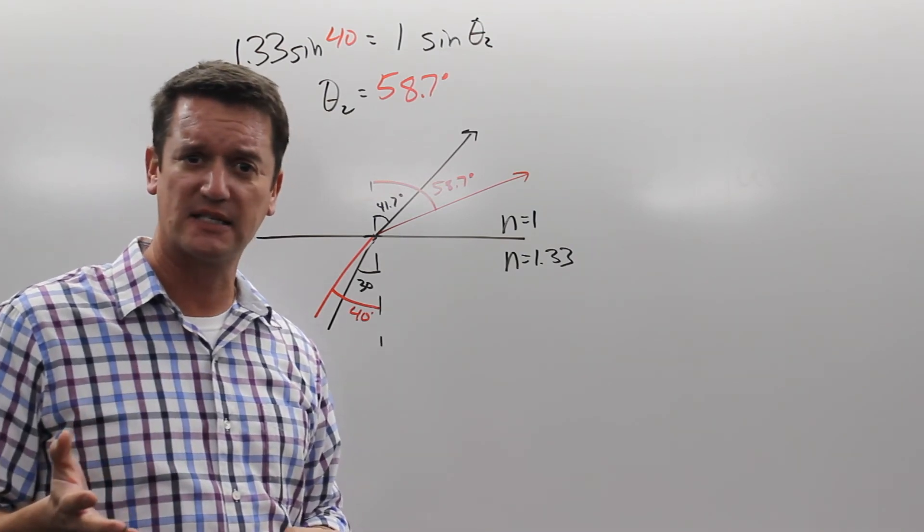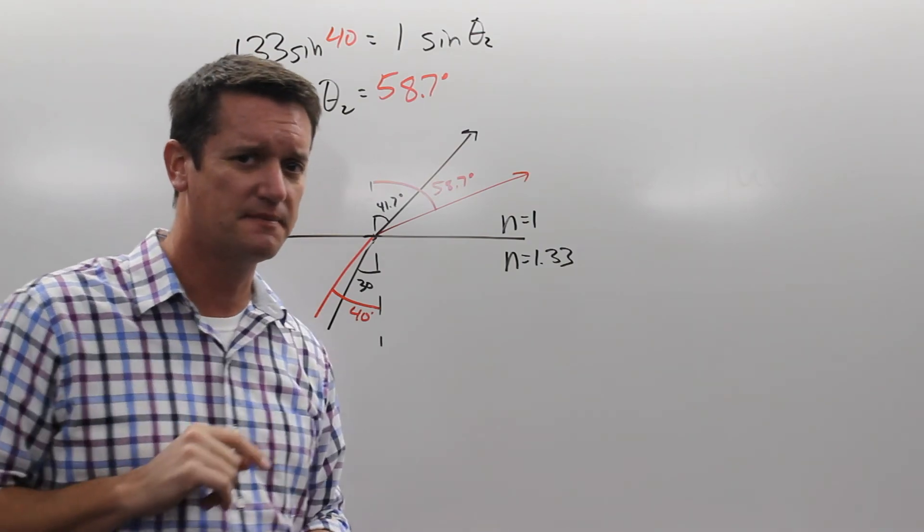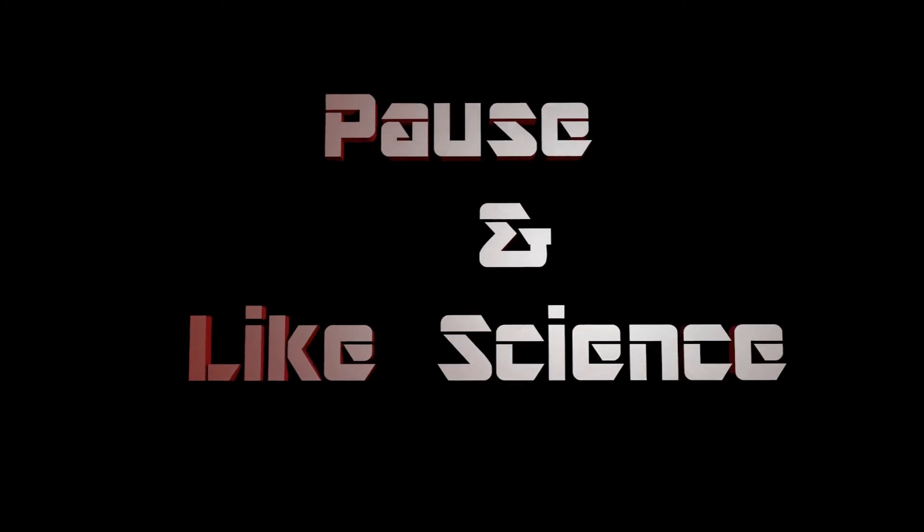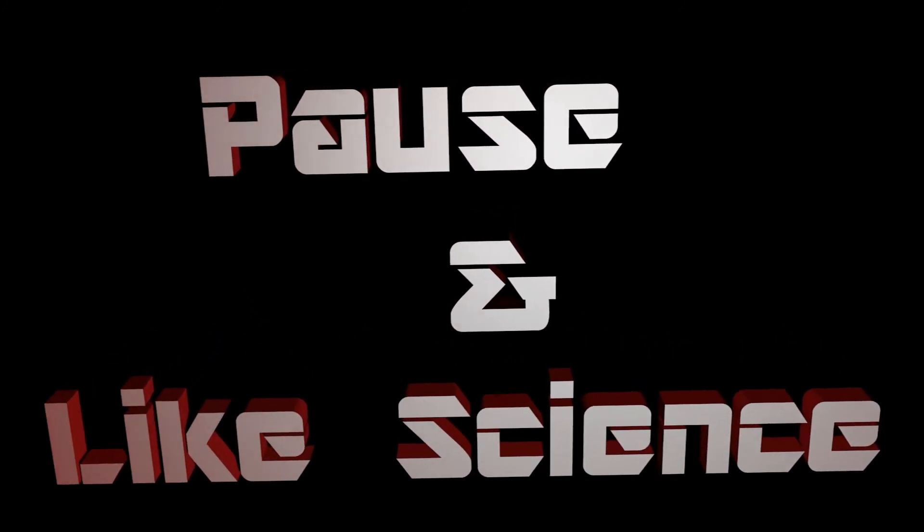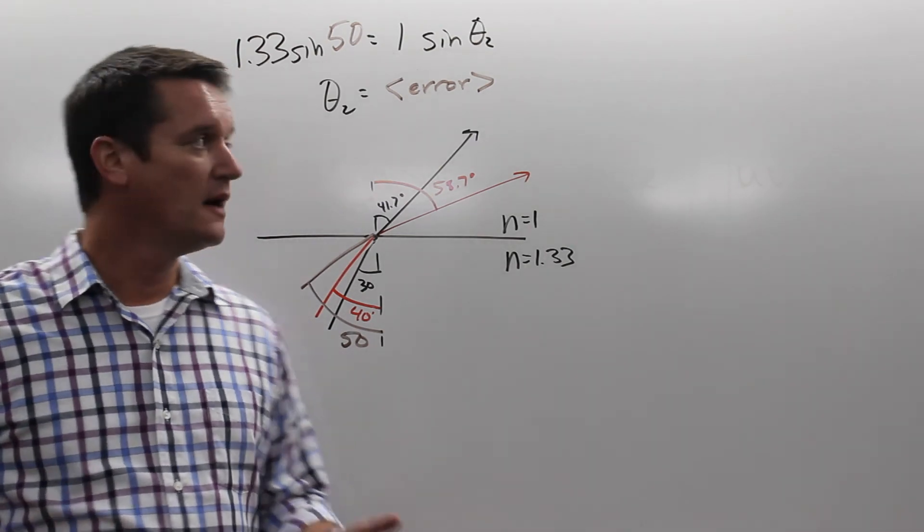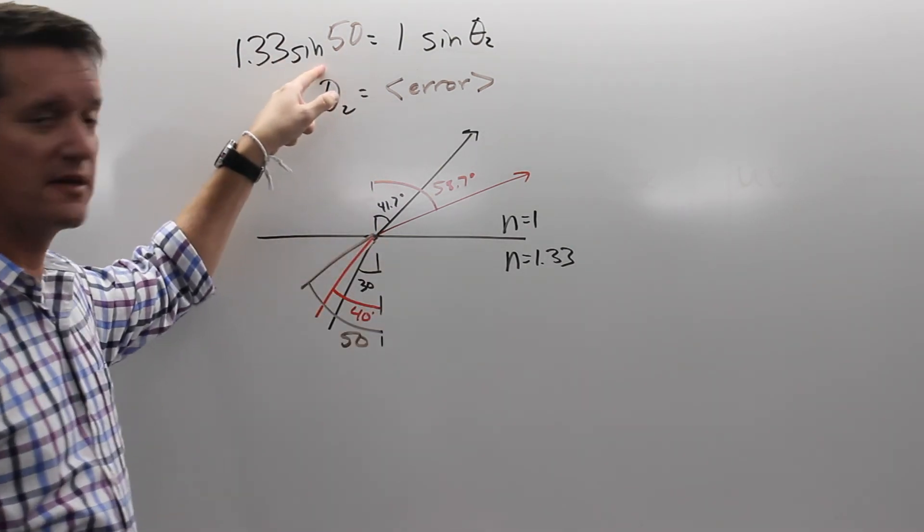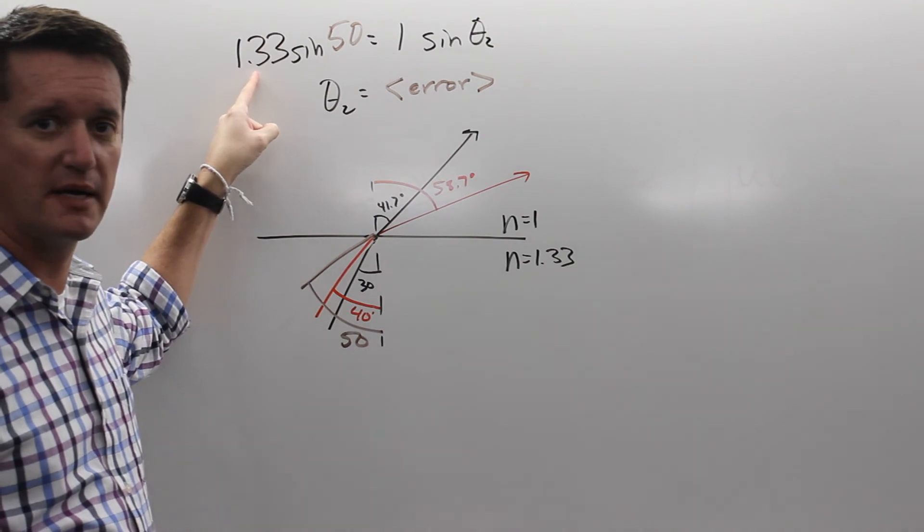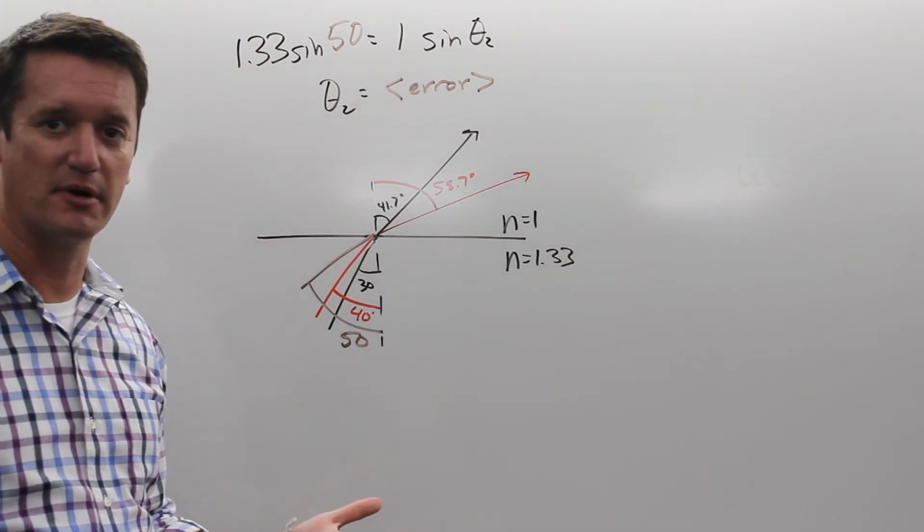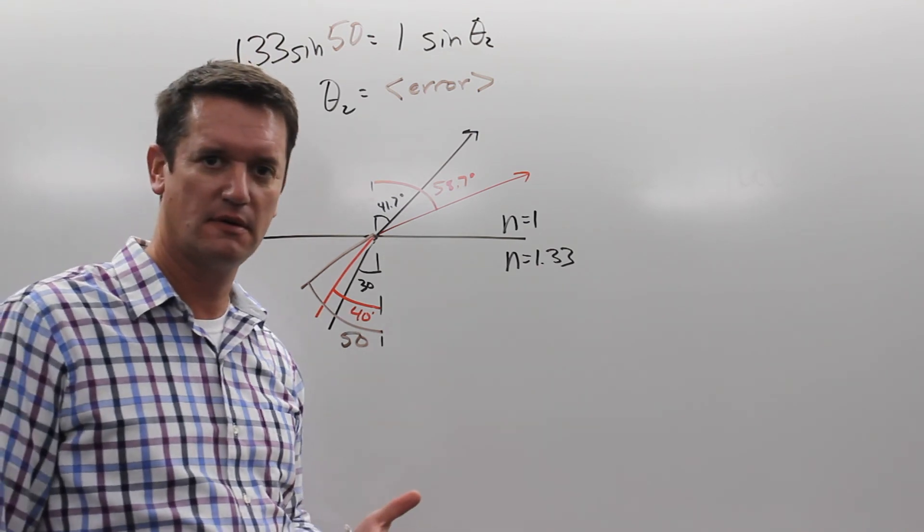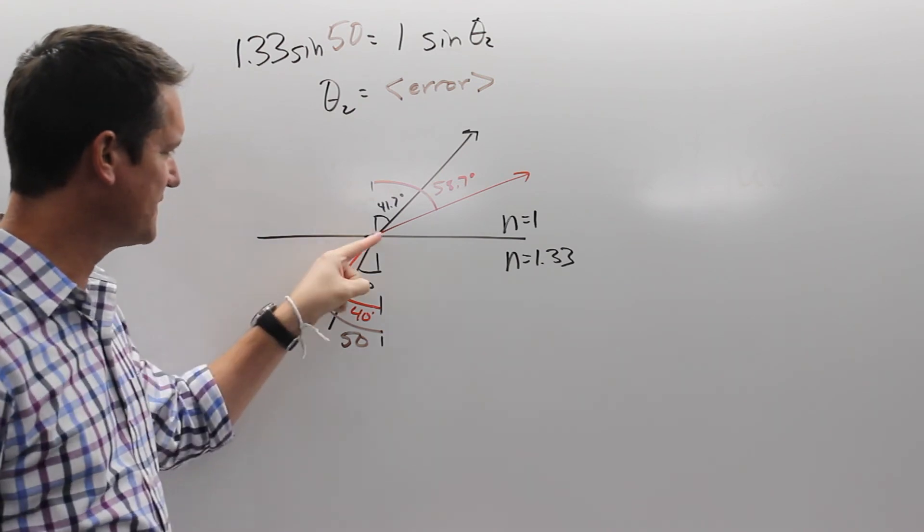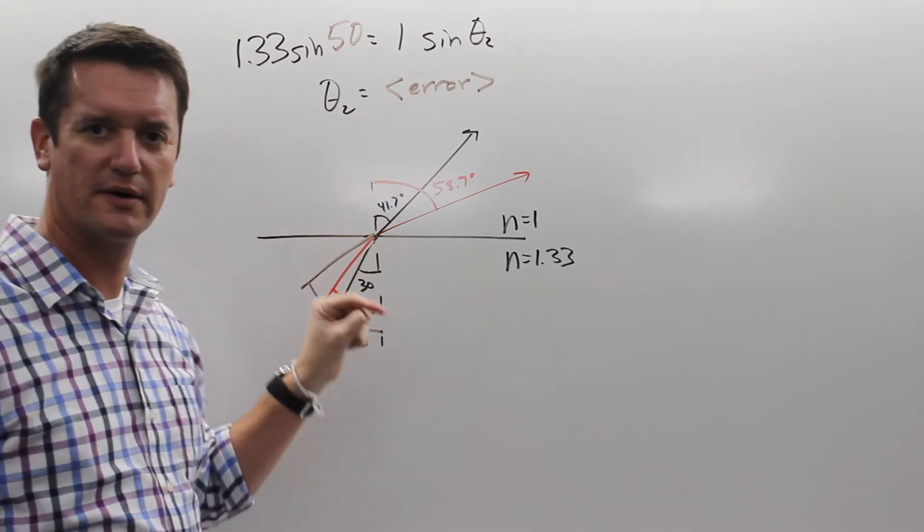Just for practice sake, do the exact same thing with 50. I ran into a problem with 50. When I put the sine of 50 in here, times 1.33, I get too big of a number. I can't take the inverse sine of that kind of a number. I get an error on my calculator. I came in at 50 degrees, where does it come out?